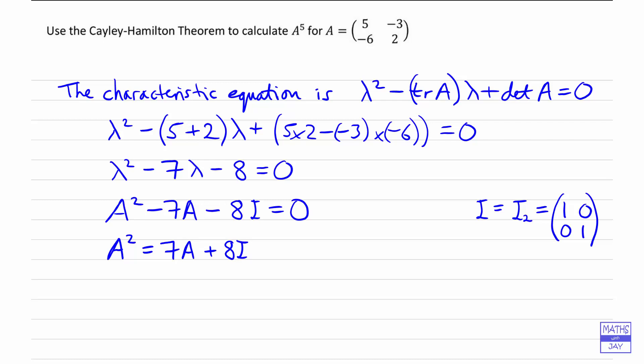Now in this question we want to calculate A to the power of 5. So there are different ways of thinking about this. One way would be to multiply both sides of this equation by A to find A³, and then multiply both sides by A again to find A⁴, and so on. But I think it's actually easier to start off by finding A⁴ by squaring both sides of this equation.